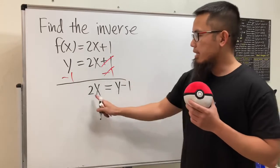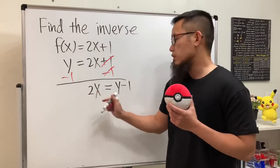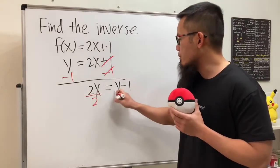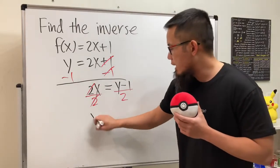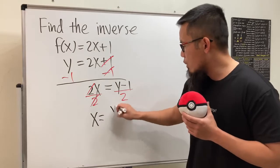And as we can see, this is 2 times x, so we will just divide both sides by 2. That way these will be cancelled, and then we will see x is just equal to y minus 1 over 2.